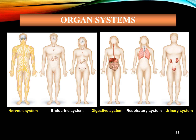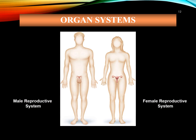The urinary system, also known as the renal system or urinary tract, consists of the kidneys, ureters, bladder, and urethra. The purpose of the urinary system is to eliminate waste from the body, regulate blood volume and blood pressure, control levels of electrolytes and metabolites, and regulate blood pH. The last organ system is the reproductive system, also known as the genital system. It is the biological system made up of all anatomical organs involved in sexual reproduction. Many non-living substances such as fluids, hormones, and pheromones are also important accessories to the reproductive system. There are two types: the male reproductive system and the female reproductive system.